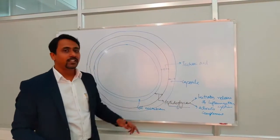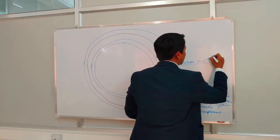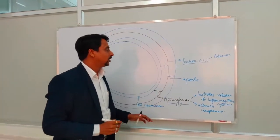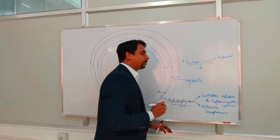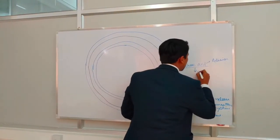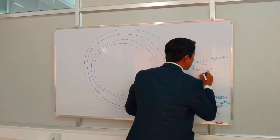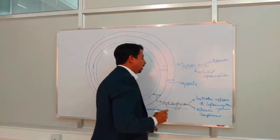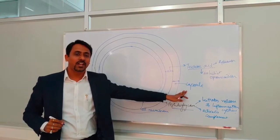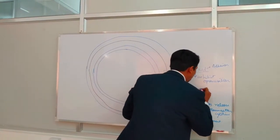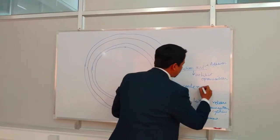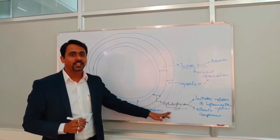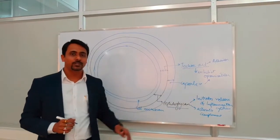The second cell-associated factor is teichoic acid, whose function is adhesion of the bacterial cell to the host cell. It also inhibits complement-mediated opsonization. The third cell-associated factor is the capsule, which is polysaccharide in nature and immunogenic; it also inhibits opsonization. So the three cell-associated factors are peptidoglycan, teichoic acid, and capsule.